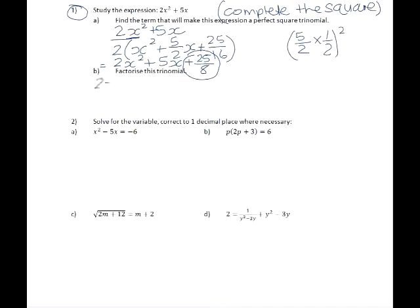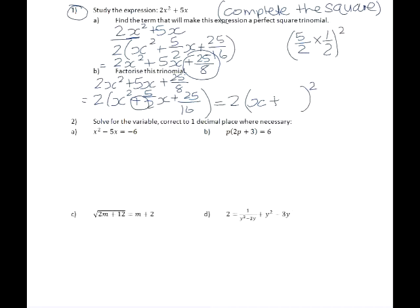In number b, we are now asked to factorize this expression: 2x² + 5x + 25/8. So we need to do the process again. Take the 2 out as a common factor, plus 25/16. And now that bracket is a perfect square, so it will factorize into a binomial squared. The middle term will be positive because we want our outers and our inners to add up to positive, and the square root of 25/16 is 5/4.